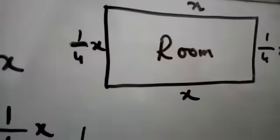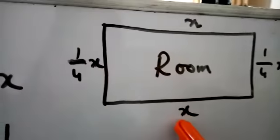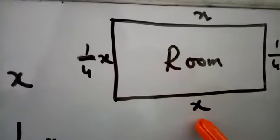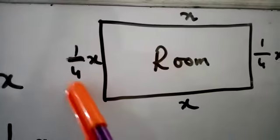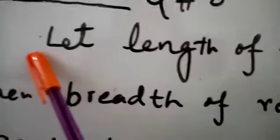First of all, we will draw a rectangular room where we will take its length as X. So according to the condition, its breadth will be equal to 1/4 of X. Let length of room be X.